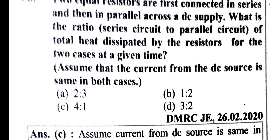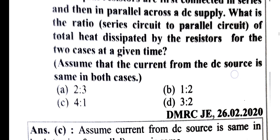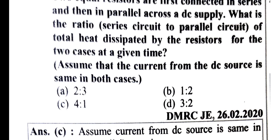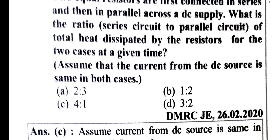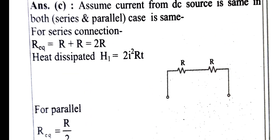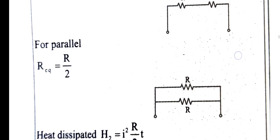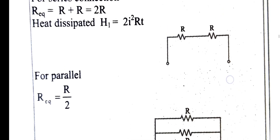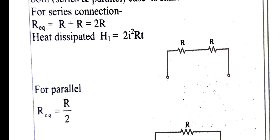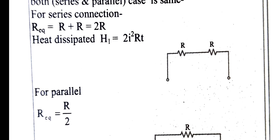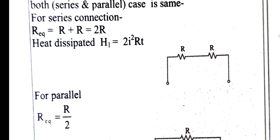Two equal resistors are first connected in series and then in parallel across a DC supply. What is the ratio of total heat dissipated — series circuit to parallel circuit — for the two cases at a given time? We assume the current from the DC source is the same in both series and parallel cases.